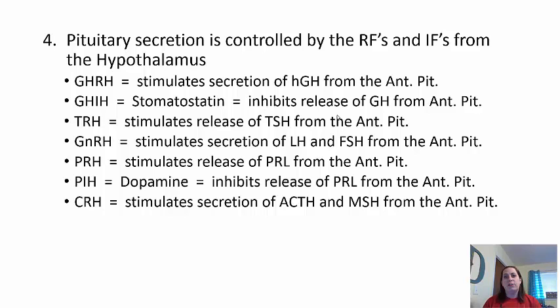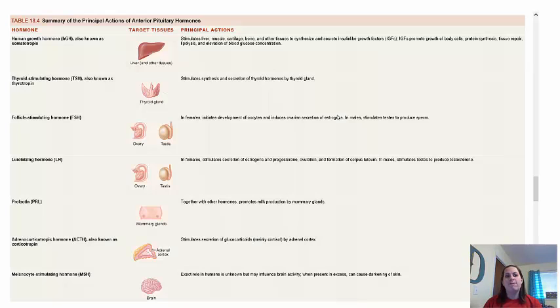We're going to focus on the pituitary gland first, looking at a few hormones produced there that go off to target tissues. Your notes have spaces for you to create a flowchart — a domino effect — showing how one hormone release leads to the next. There is a summary table of anterior pituitary hormones (Table 18.4 on page 628 in the 14th edition) listing the hormone, target cells, and their action.